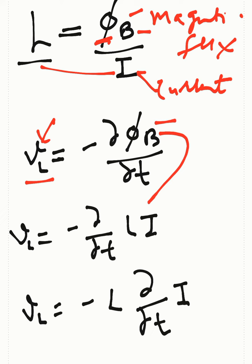can plug the value of phi B into this equation. The voltage produced across the inductor can be written as minus d/dt of L times I, where LI equals phi B. By rearranging the